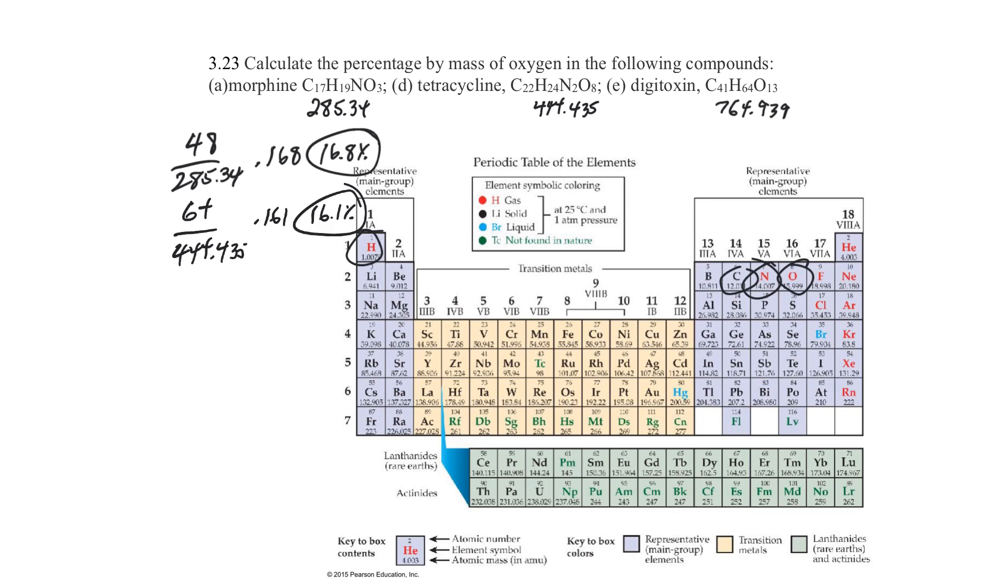So we have 13 times 16, which is 208, and divide that by 764.939. And you're going to get 0.211, which is 21.1%.